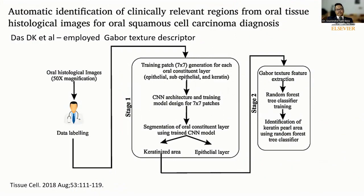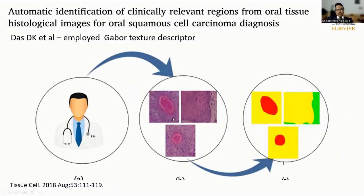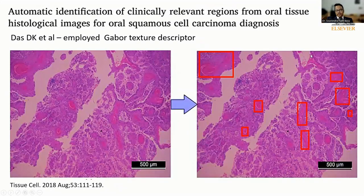Harnessing artificial intelligence, automatic identification of clinically relevant regions from oral histological images has also been studied. For example, Das Dick et al. studied oral squamous cell carcinoma and trained their AI-based algorithm to identify keratin pearls. In given histopathological images of oral squamous cell carcinoma, their program showed good accuracy in detecting keratin pearls, as you can see in this histopathological image, demonstrating a promising segmentation accuracy of 98.05%.